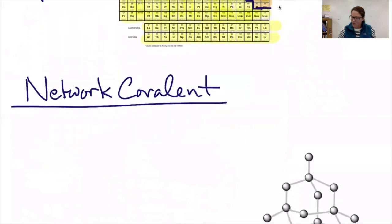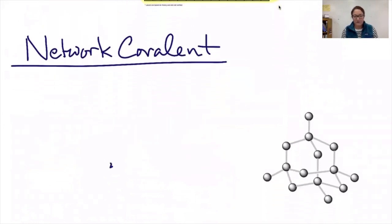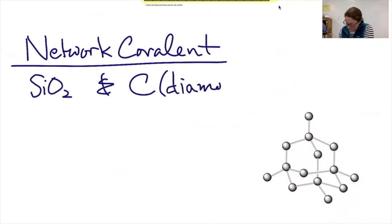The first type that I want to mention is network covalent. There are just going to be two cases of network covalence that you need to know. The two are SiO2 and pure carbon in the diamond form. SiO2 in this case is a quartz crystal. If you think about those two as examples, you'll know a lot about them.